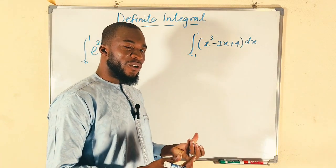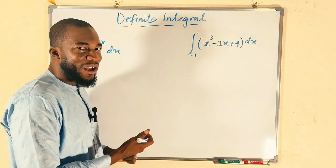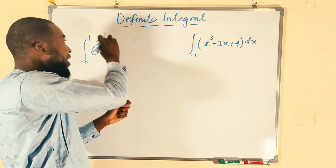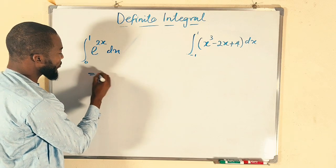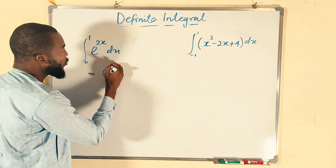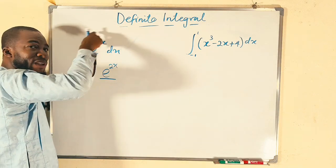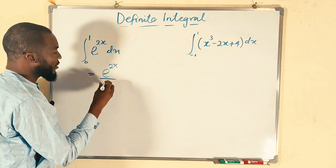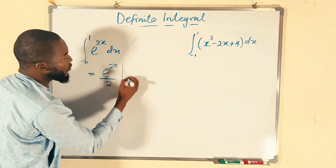Integrating exponential function will result to the exponential function, but you have to divide by the derivative of the exponent 2x. So this is equal to e to the 2x. But make sure to divide by the derivative of that exponent, which is going to give us 2. Our boundary is from 0 to 1.